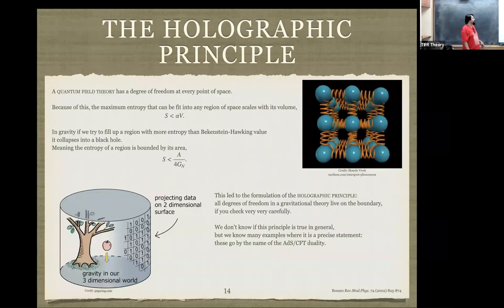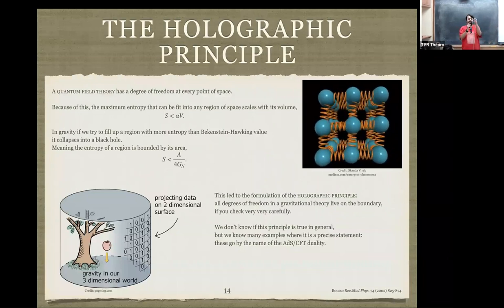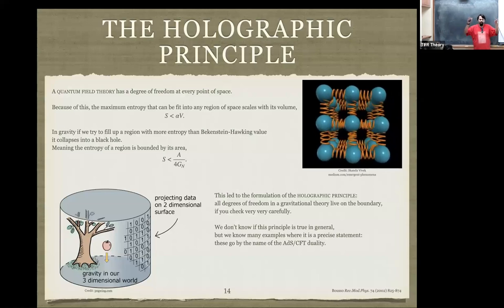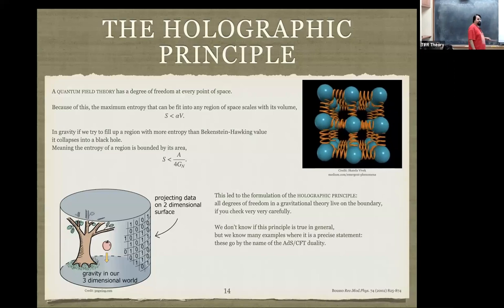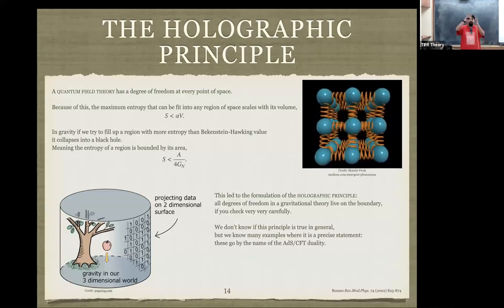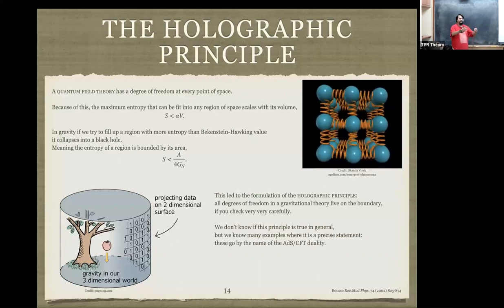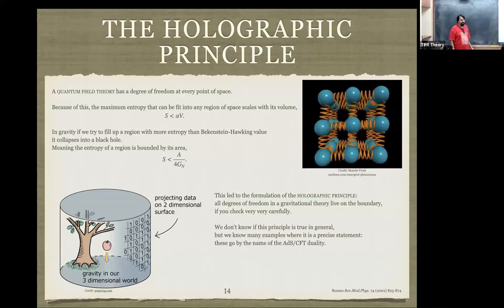This fact led to the formulation of the holographic principle. You can read better arguments in the review by Rafael Bousso called 'The Holographic Principle.' In some sense, entropy is bounded by A over 4G_Newton. This says that if everything about the state inside is encoded on the boundary, then in some sense the state actually lives on the boundary — everything is happening on the boundary. If the state changes, you can see it on the boundary; if you measure something, you can measure it on the boundary. So: all degrees of freedom in a gravitational theory live on the boundary.